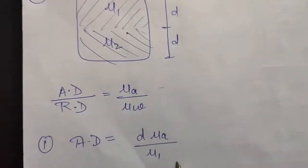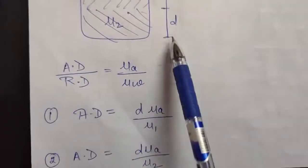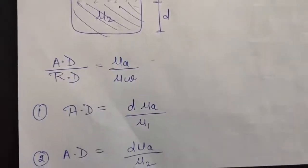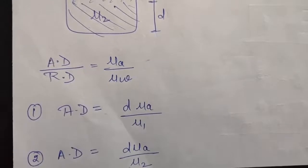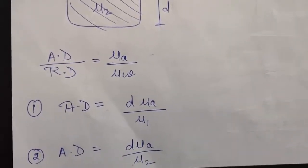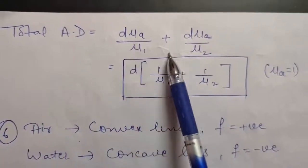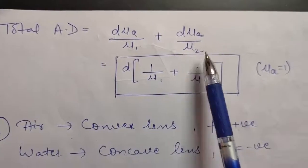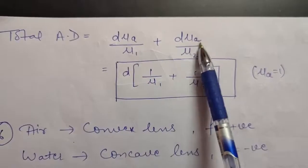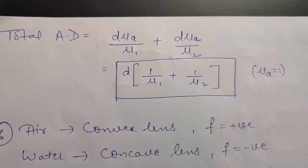Similarly, apparent depth for the second case will be real depth d times mu_a divided by mu2. To calculate total apparent depth, we add apparent depth due to the first liquid plus apparent depth due to the second liquid. Since the refractive index of air is 1, putting mu_a = 1, the total apparent depth will be d times (1 upon mu1 plus 1 upon mu2).